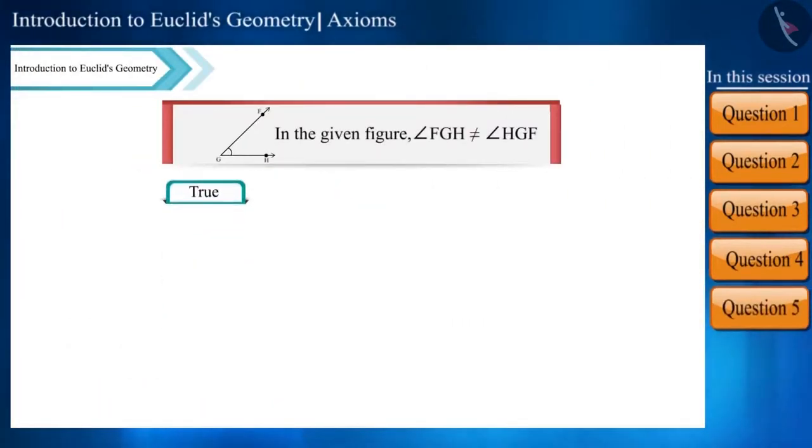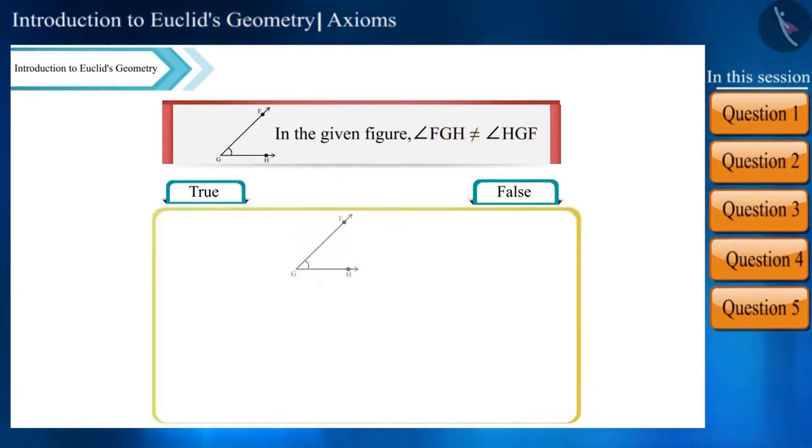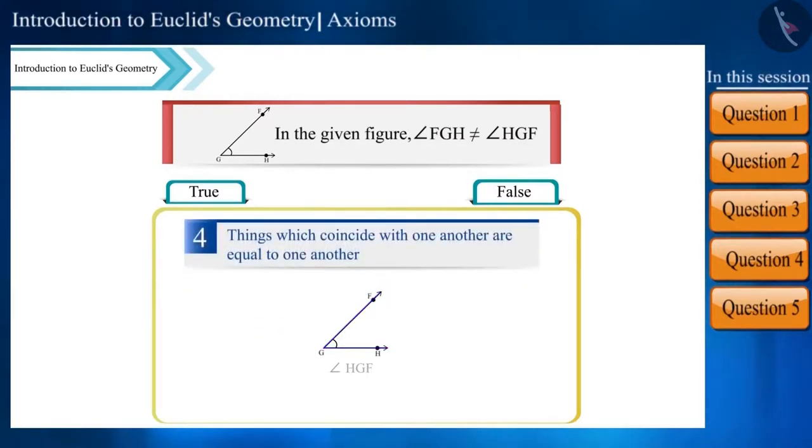Is the given statement true or false: angle FGH is not equal to angle HGF? If we look at the figure carefully, both these names represent the same angle. According to Euclid's fourth axiom, things which coincide with one another are equal to one another. Therefore, these two angles are equal and the statement is false.